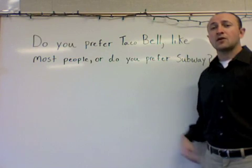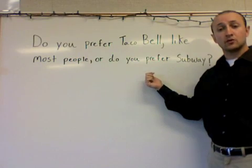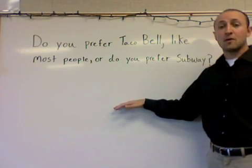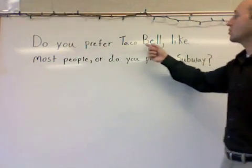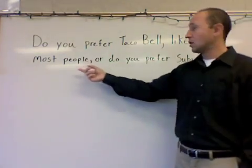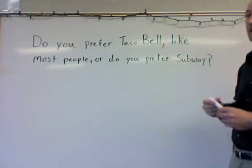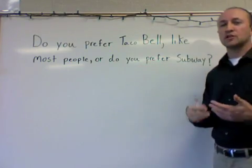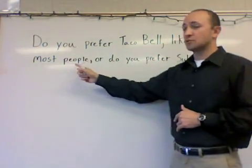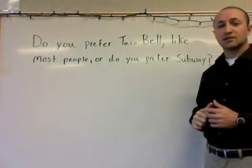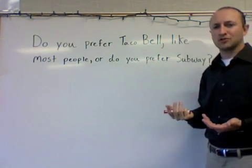Now we're going to learn not only how to identify a sampling error, but also how to correct the question to make it so there's no bias. So let's look at our next question. We're being asked: do you prefer Taco Bell like most people, or do you prefer Subway? The error here is not a single word trying to influence me, but the phrase 'like most people' — it's telling me that most people prefer Taco Bell, so I probably should too.